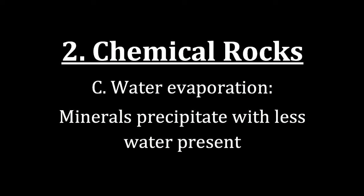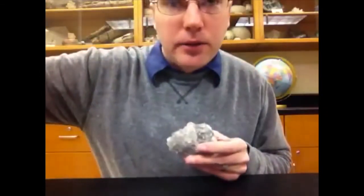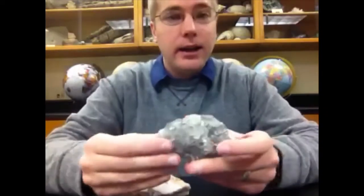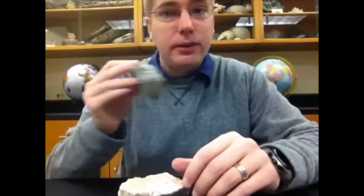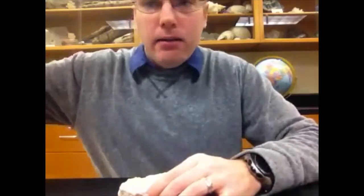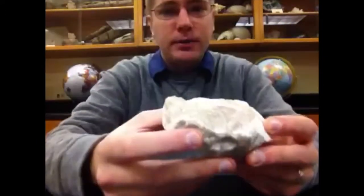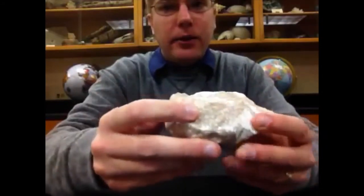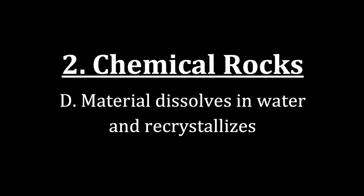The next piece of information we can glean from chemical rocks is looking at water evaporation. As water leaves and becomes less present, minerals will begin to precipitate from that evaporating pool of water. The two most common minerals we get when water evaporates are halite — which we have in this rock, and its special property is it tastes salty — and gypsum, which you can scratch with your fingernail to make a powder. Both gypsum and halite are called evaporite minerals because they form when water evaporates, changing the concentration until those crystals begin to precipitate and grow.